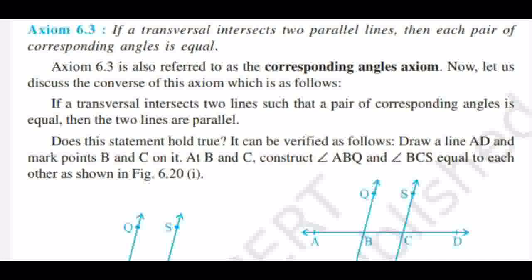We've already studied two axioms. The next axiom is: if a transversal intersects two parallel lines, then each pair of corresponding angles is equal. In the case of parallel lines and a transversal, corresponding angles are equal. This axiom is known as the corresponding angles axiom.